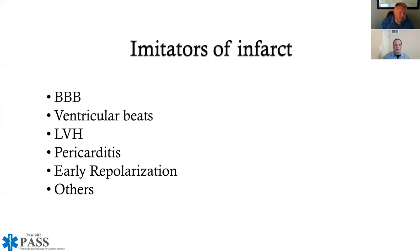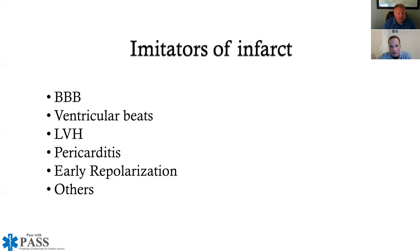Moving to STEMI imitators: bundle branch blocks — both left and right — ventricular beats, left ventricular hypertrophy, pericarditis, and early repolarization can all mimic infarction patterns. The ones most likely to appear on national registry exams are bundle branch blocks, ventricular beats, and left ventricular hypertrophy. A quick look at V1 first when reading any 12-lead is recommended, because V1 will never lie to you — it gives an accurate depiction of what's occurring on the EKG.